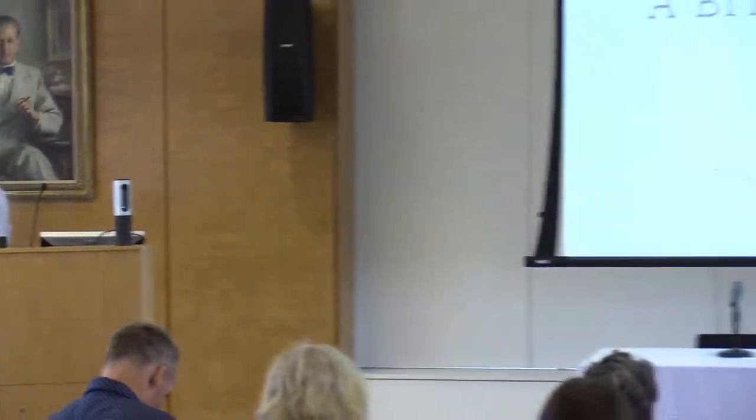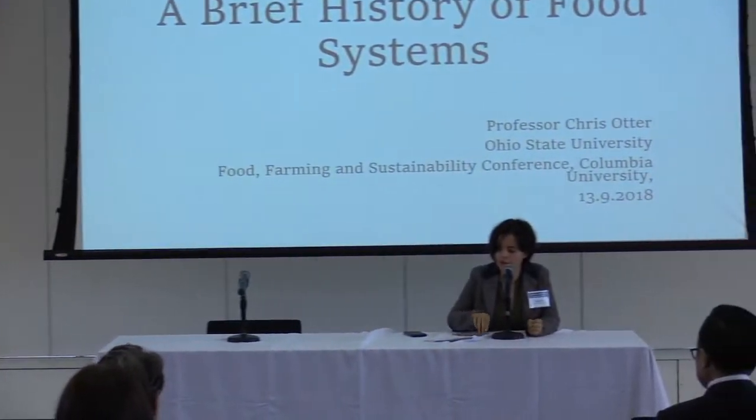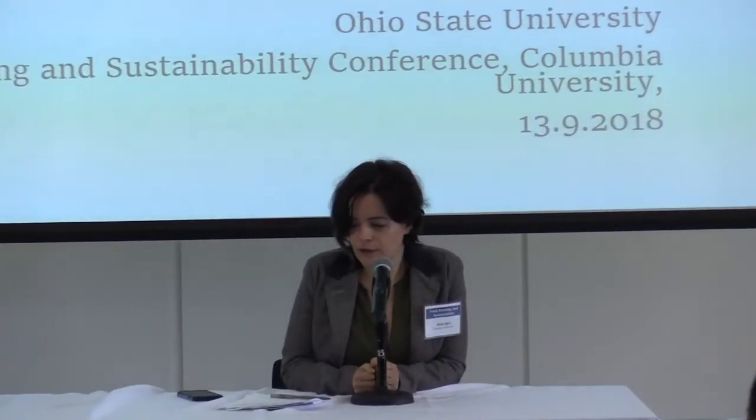Chris Otter is an Associate Professor of History at The Ohio State University. He is the author of The Victorian Eye: A Political History of Light in Victorian Britain, published by University of Chicago Press. His upcoming book, Diet for a Large Planet: Food Systems, World Ecology, and the Making of Industrial Britain, will also be published with the University of Chicago.